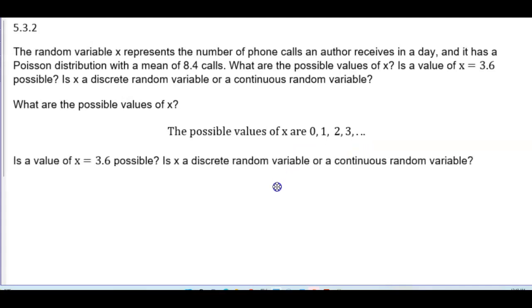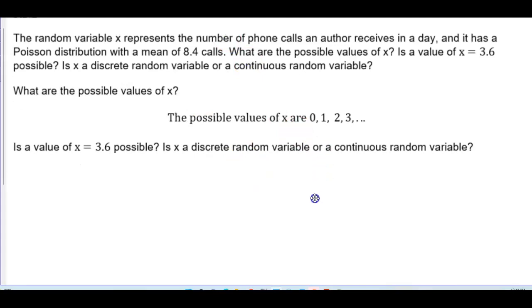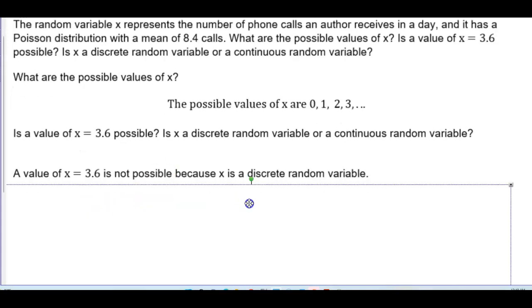Now, is the value of x equals 3.6 possible, and is x a discrete random variable or a continuous random variable? Well, the value of x equals 3.6 is not possible because x is a discrete random variable.